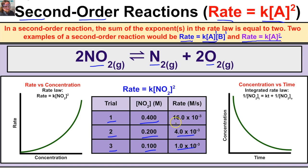Comparing trial two to trial three, we are doubling the concentration. Taking 0.200 divided by 0.100, we get two to the m power, set equal to 4.0×10⁻³ divided by 1.0×10⁻³, which equals four. Two to what power equals four? m equals two, since 2² = 4. The order of this reactant is two, and because we only have one reactant the overall reaction order is two. The rate law is: rate = k × [NO2]².